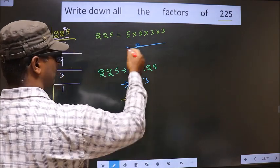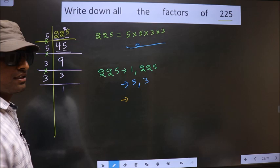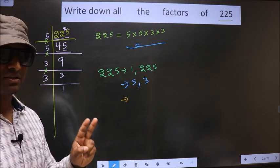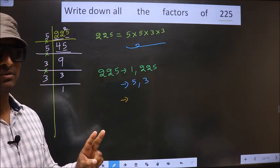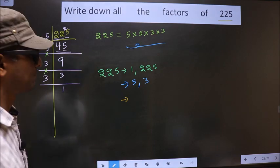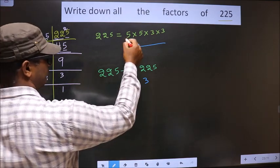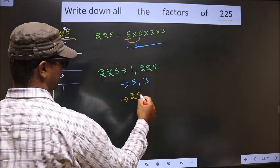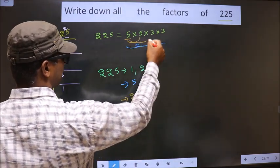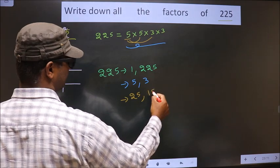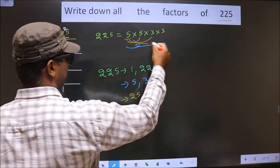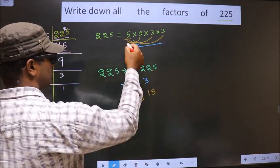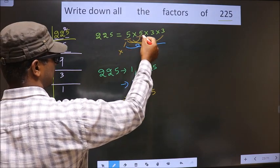Now, from these numbers, now you take a combination of two numbers. How do we do that? First, I fix 5 and I combine it with the 5. I get 25. Now, you combine this with 3. We get 15. If I combine with this 3, still 15. So, now you leave this 5, take this.